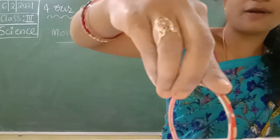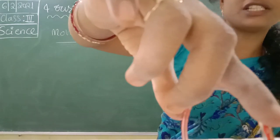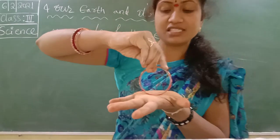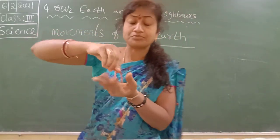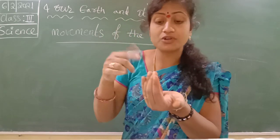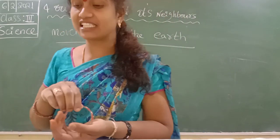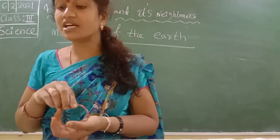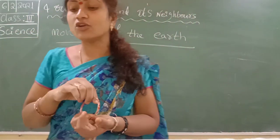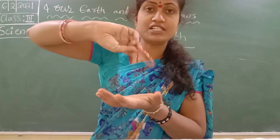You have to do this experiment, children. When you are spinning the bangle, it is moving speedily. When you spin it very fast, you see some round imaginary lines. This picture is clearly shown in our textbook. How does the spinning bangle appear?